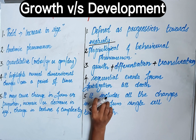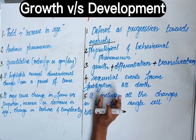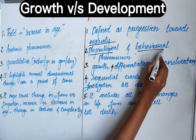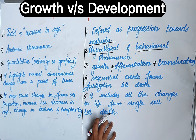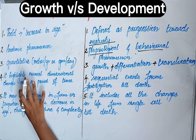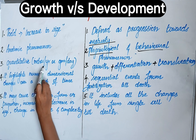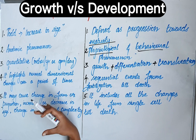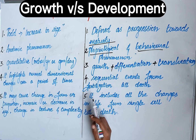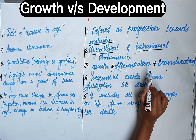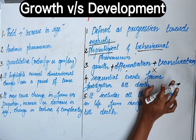Second difference: growth is an anatomic phenomenon because there is a change in size, which is anatomical. Whereas development is not only a change in size — it is a physiological and behavioral phenomenon. Third difference: growth is measurable and quantitative; we can measure it with units like inches or grams. Whereas development includes growth, differentiation, and translocation, so it is not quantitative.